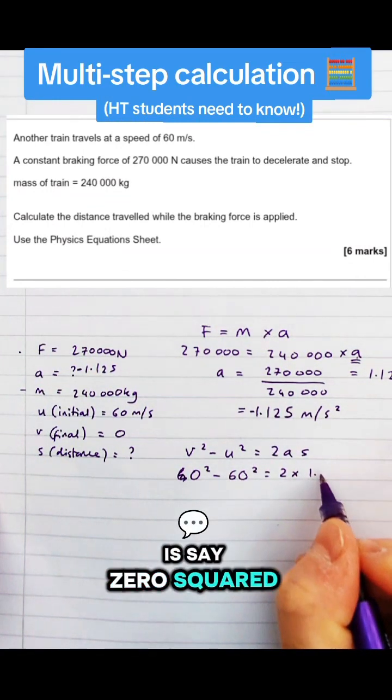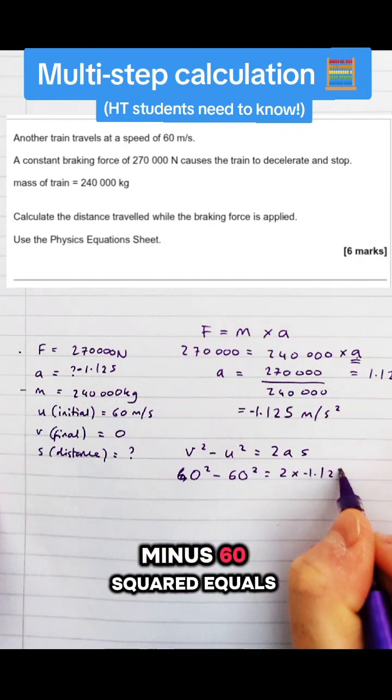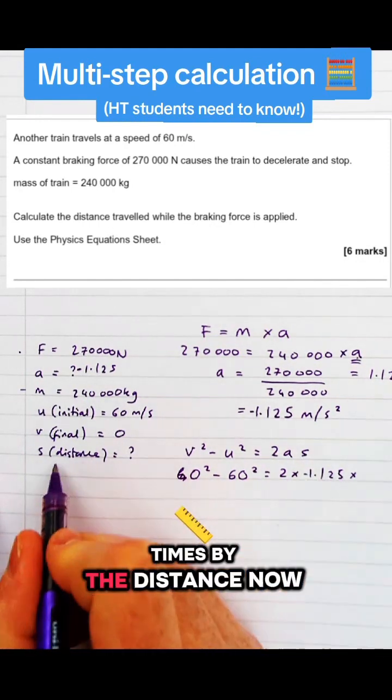So what we're going to do is say 0 squared, which is our final velocity, minus 60 squared equals 2 times the acceleration times by the distance.